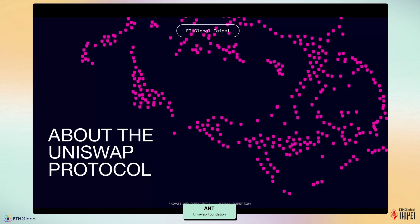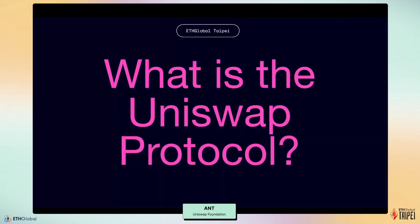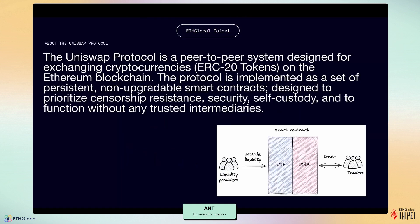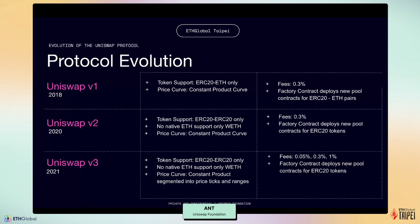Now let's talk about the Uniswap protocol. The Uniswap protocol is a peer-to-peer system designed for exchanging cryptocurrencies, specifically ERC20 tokens, on the Ethereum blockchain. The protocol is implemented as a set of persistent, non-upgradable smart contracts. It is designed to prioritize censorship resistance, security, self-custody, and to function without any trusted intermediaries. Let's take a look at how the Uniswap protocol has evolved over time — this context is important for understanding the significance of the V4 release.